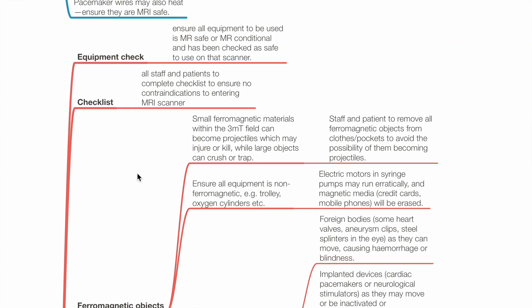Part C — other precautions to minimize risks associated with MRI. Equipment check: ensure all equipment to be used is MR-safe or MR-conditional and is safe to be used in that scanner. Checklist: all staff and patients should complete checklists ensuring no contraindications to entering the MRI scanner.